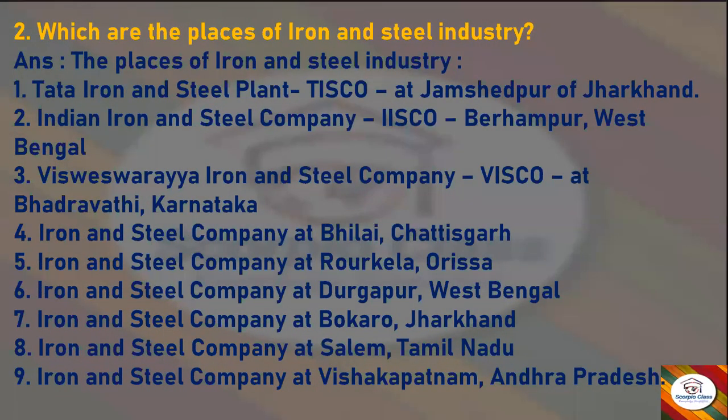Next question: Which are the places of iron and steel industry? Answer: The places are — Tata Iron and Steel Plant (TISCO) at Jamshedpur, Jharkhand; Indian Iron and Steel Company (IISCO) at Burnpur, West Bengal; Visvesvaraya Iron and Steel Company (VISCO) at Bhadravati, Karnataka; Iron and Steel Company at Bhilai, Chhattisgarh; Iron and Steel Company at Rourkela, Odisha; Iron and Steel Company at Durgapur, West Bengal; Iron and Steel Company at Bokaro, Jharkhand; at Salem, Tamil Nadu; and at Visakhapatnam, Andhra Pradesh.